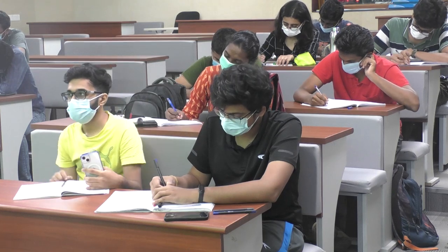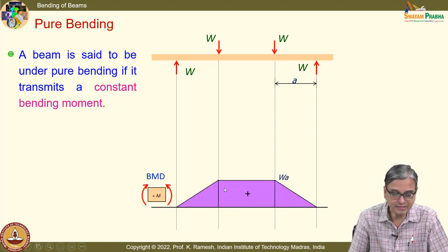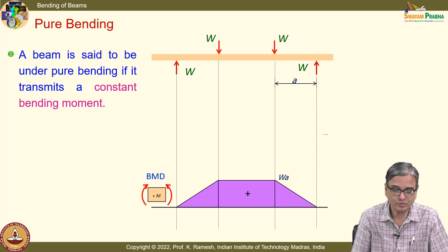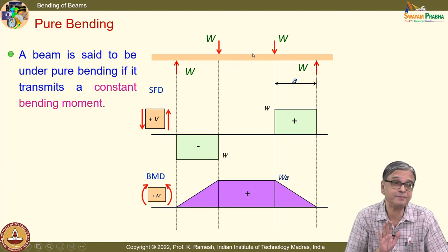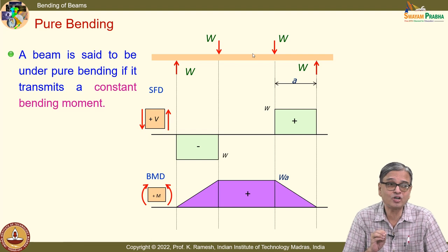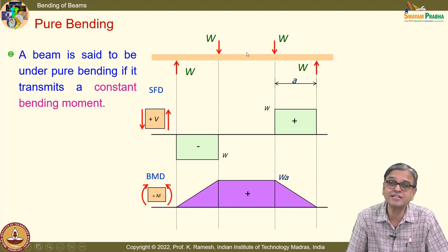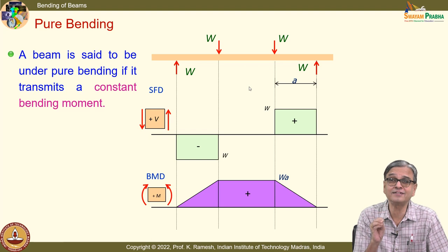I have drawn the bending moment first because the interest is in this central portion of the beam — the beam is transmitting only bending moment. Which you can confirm when you draw the shear force diagram — shear force is completely zero in this section. In this section, it transmits only the bending moment. We are going to develop our logic to find out the stresses only for a beam experiencing constant bending moment. If it is anything other than constant bending moment, you have to see how the results are applicable. That is very, very important.